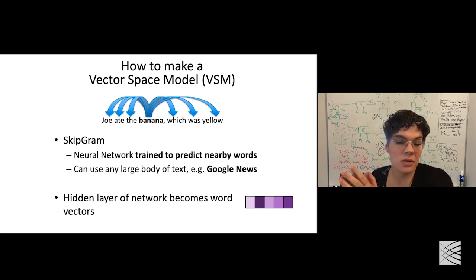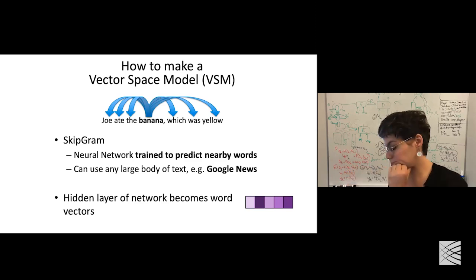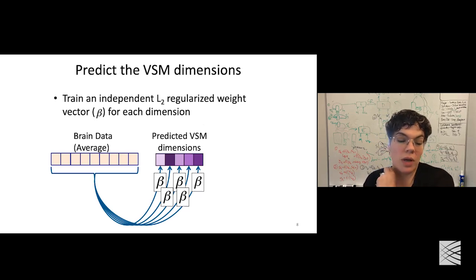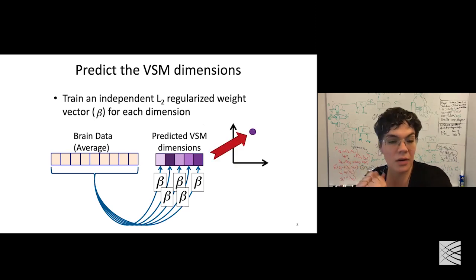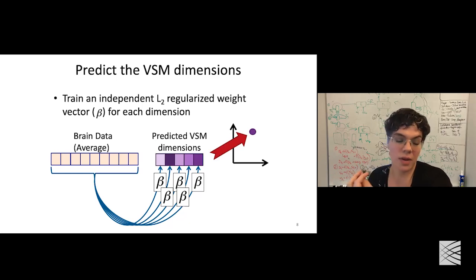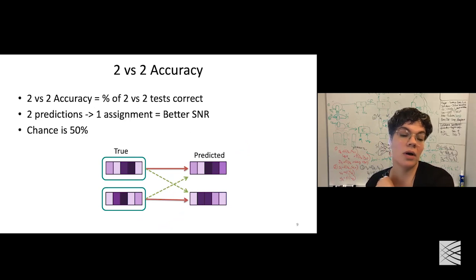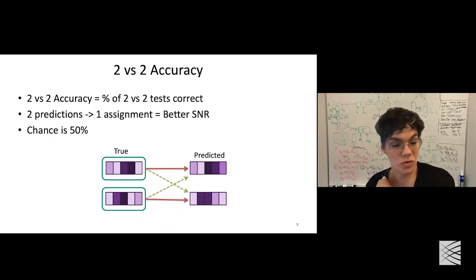Here's how these models are visualized: brain imaging data comes in, averaged across repetitions of a particular stimulus, then a whole set of beta weights is trained. When those beta weights are applied to the brain imaging data, we get predicted vector space model dimensions — a predicted point in space. We would like that predicted point to be closer to the true word vector for the word the brain data was taken from than to other word vectors, assessed using the two-versus-two test.